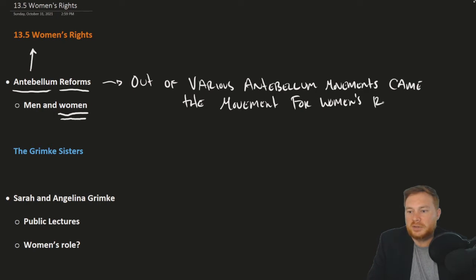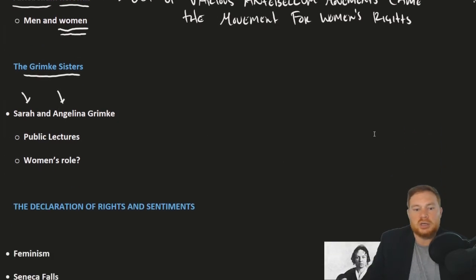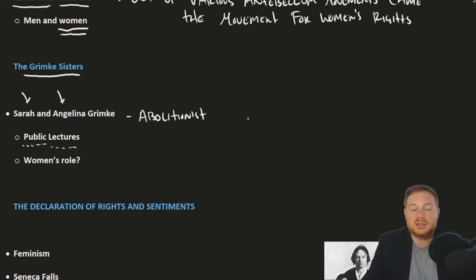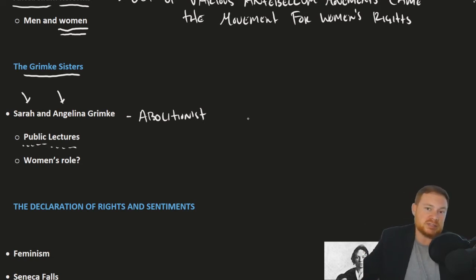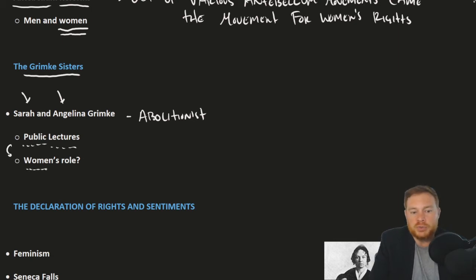A good example of this is the case of the Grimke sisters, Sarah and Angelina Grimke. Initially they were abolitionists who gave public lectures on the evils of slavery and advocated for its end. However, during these lectures they oftentimes found themselves defending the fact that they were women who had a public platform to speak. Not only were women prohibited from voting or holding office, but stereotypes also really prohibited women from having a public voice. So the issue of women's rights, in some sense, took precedence over abolition or temperance, opening up a dialogue about what is a woman's role in society.